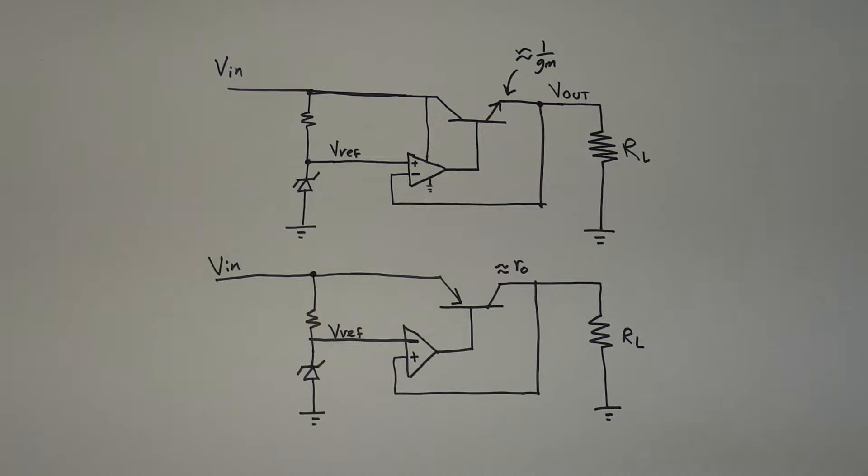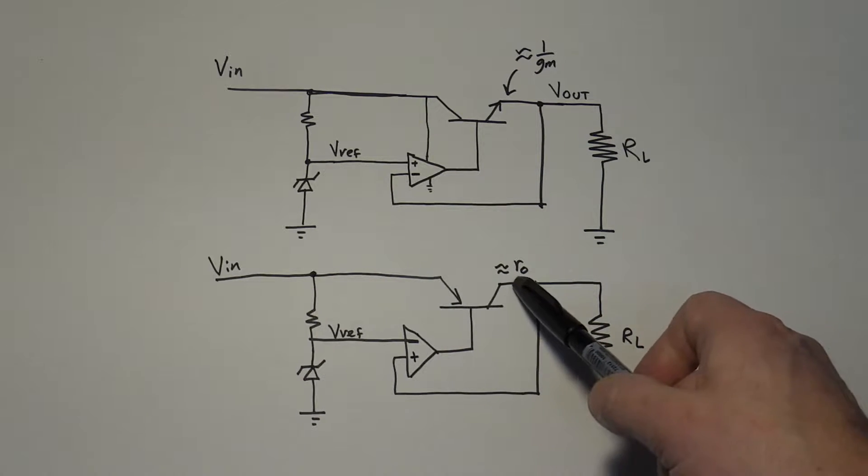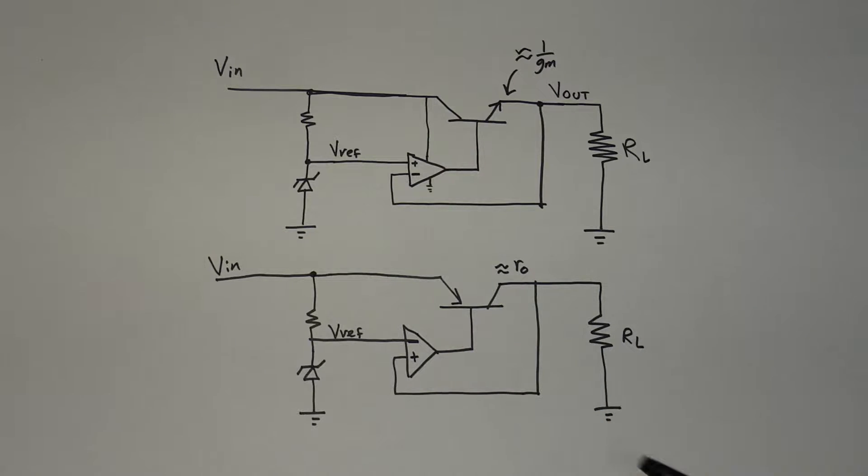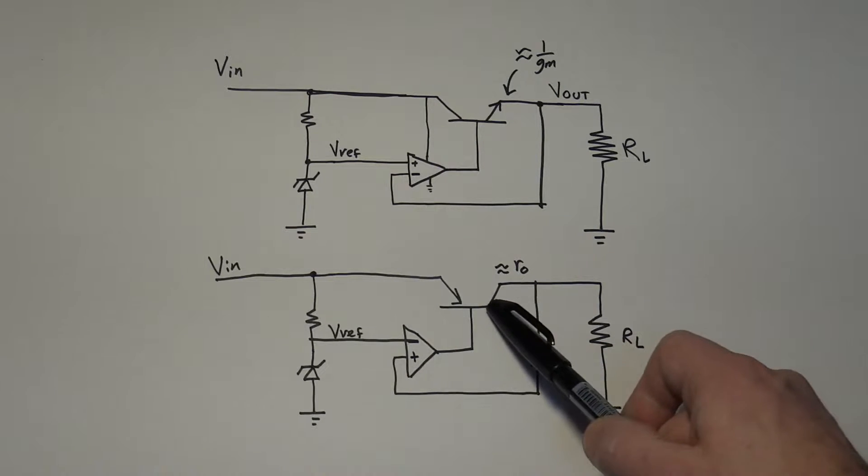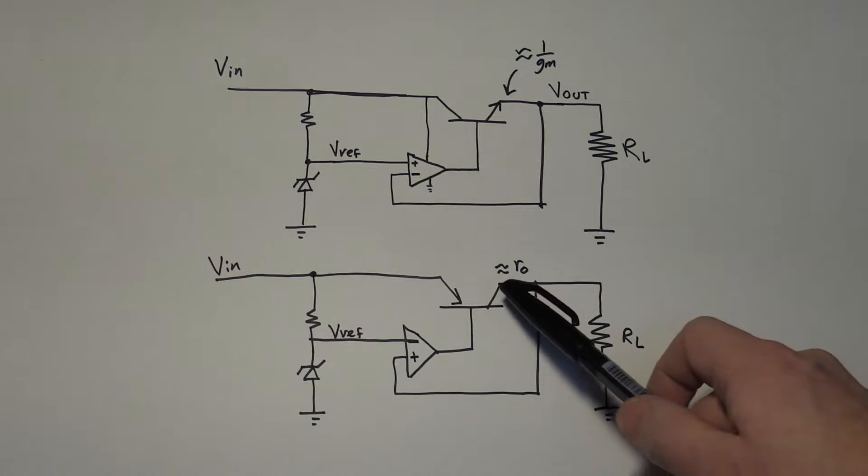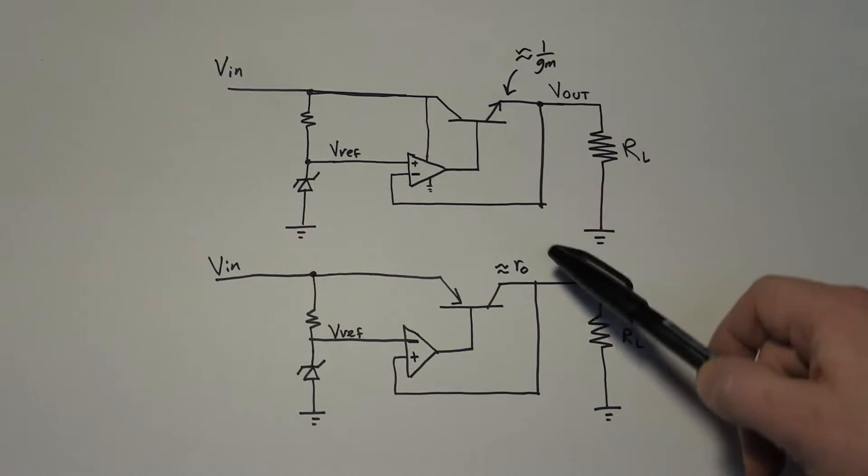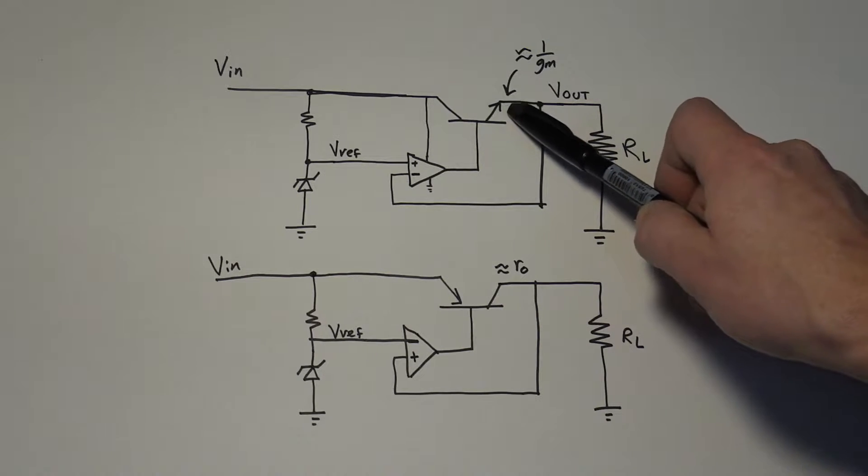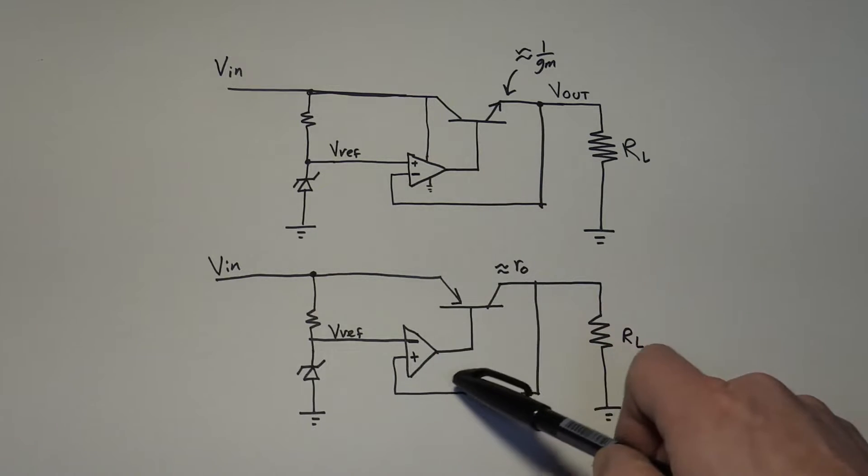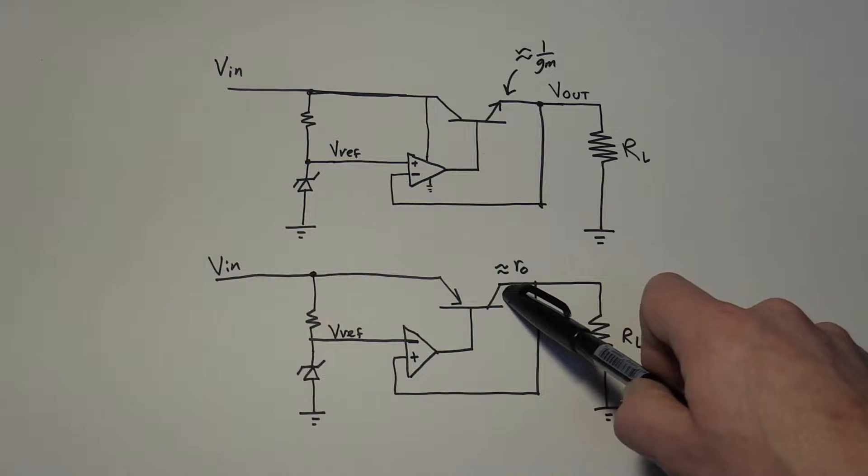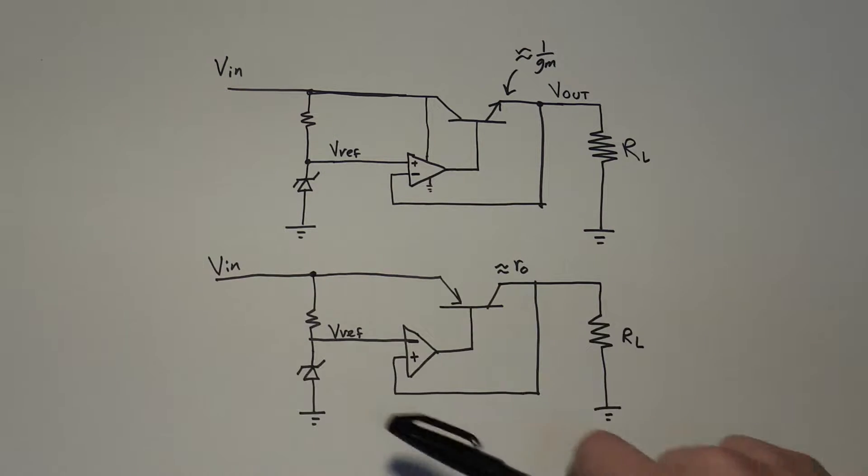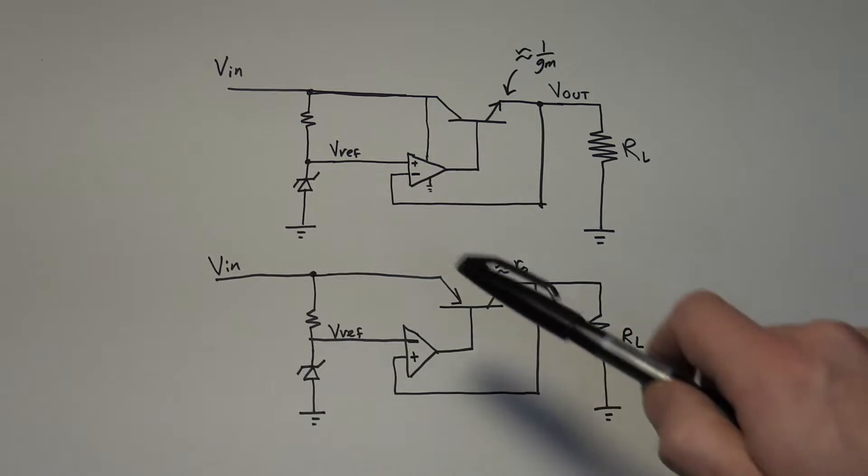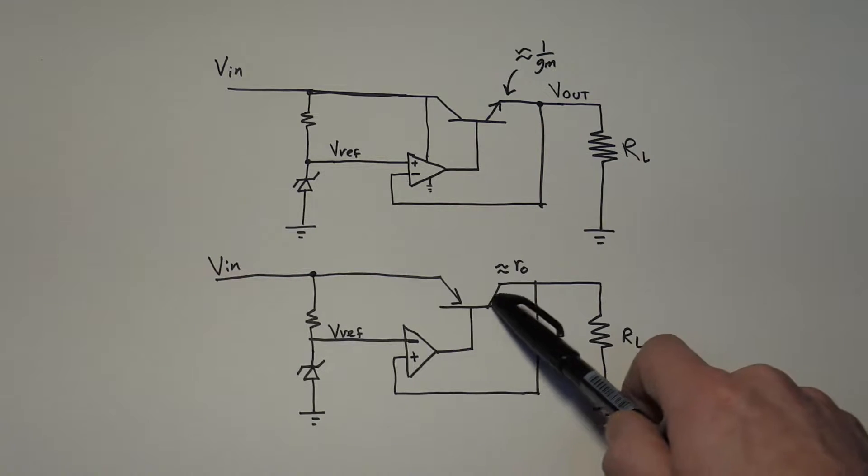With the LDO you'll notice the transistor terminals have been flipped around and it's the other type of transistor too. We have the emitter as the input and then the output here is the collector. The main difference between these two is the impedance of this terminal. The impedance here is 1 over gm, that could be just like tens of ohms, maybe 10 ohms maybe 20 ohms. And the impedance right here is RO which could be 20,000 ohms or 50,000 ohms. It's something very high.